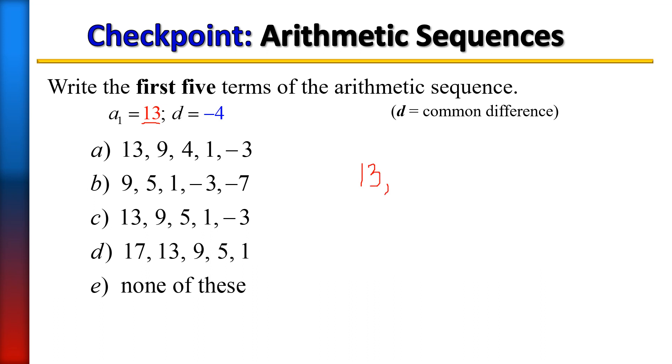Now to find the other terms in the sequence, you're going to use your common difference. Here d stands for common difference, so your common difference is -4. I'm going to give you a moment to try to do it on your own, and then I will explain it in a moment.